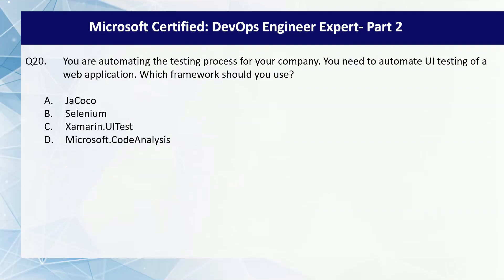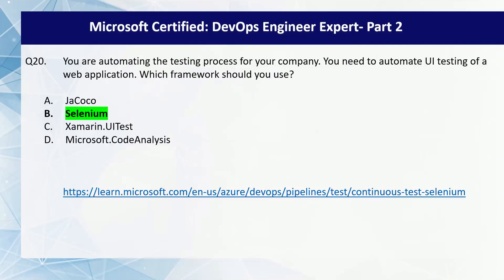Question number 20 of the series. You are automating the testing process for your company. You need to automate UI testing of a web application. Which framework should you use? The options are Zaccoco, Selenium, Xamarin.UITest, and Microsoft.CodeAnalysis. Selenium is the best choice for automating UI testing of a web application. It supports multiple browsers, allows writing test scripts in multiple programming languages, simulates user interactions, and integrates with Azure DevOps.